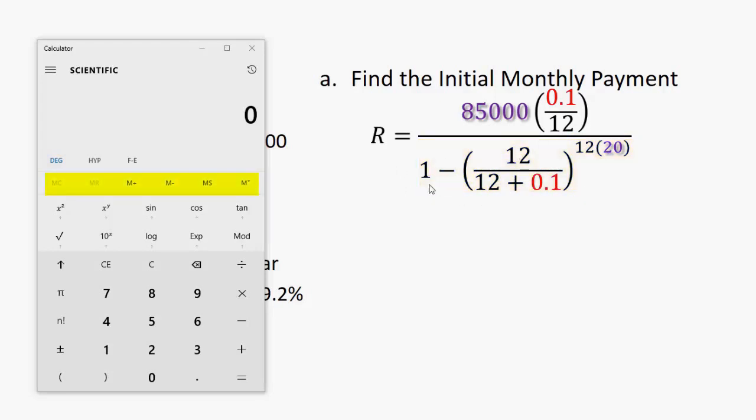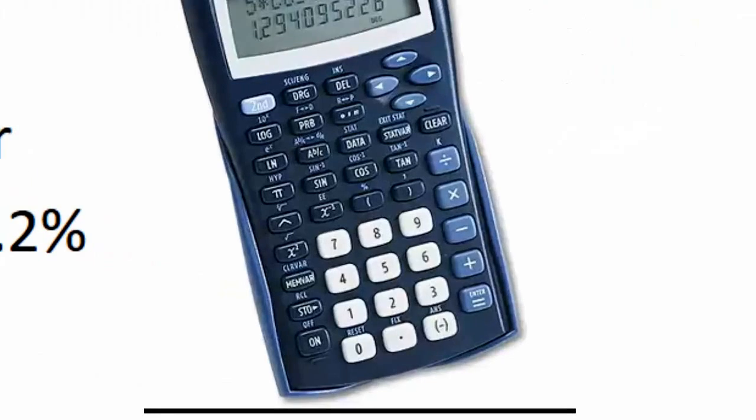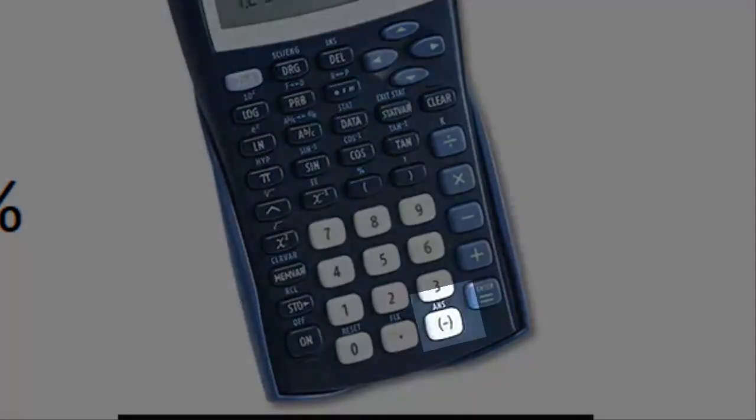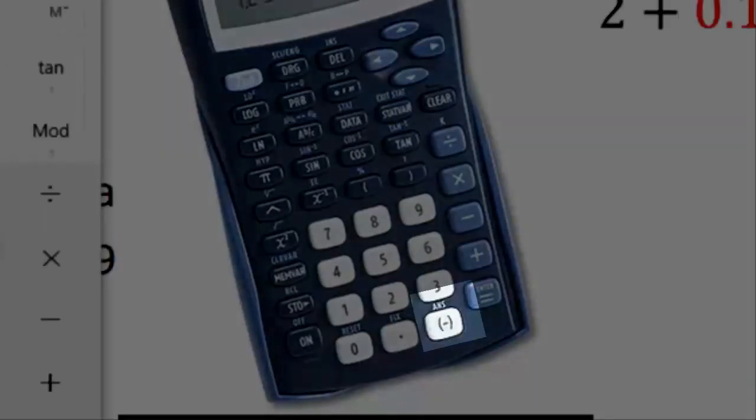So I'm going to do all of this, and I'm going to use my calculator's memory function. Now, in your standard Texas Instruments calculator, every time you hit equals, your calculator is going to retain that last answer. And you have an ANS button on your calculator, which you can also use as your memory function.